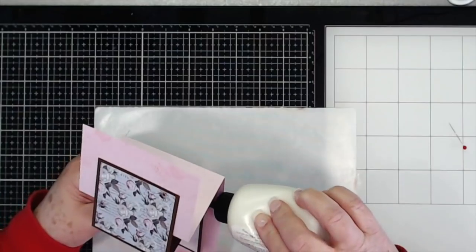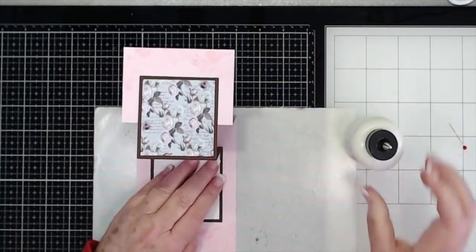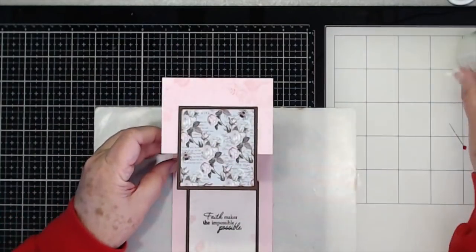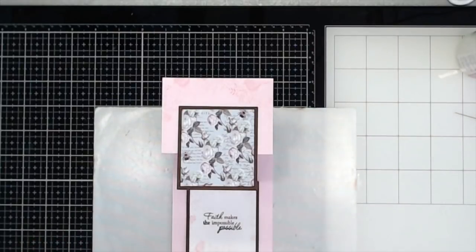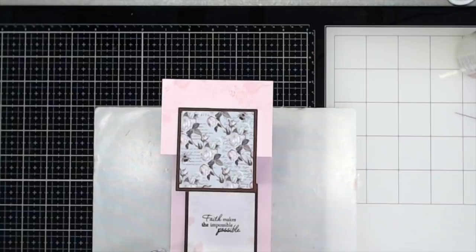Now what you want to do for this bottom part is again you want to close that up, because you want your card to close in the end. So close that up, lift the bottom part up and put some glue under there. That makes it easy to put this card together.